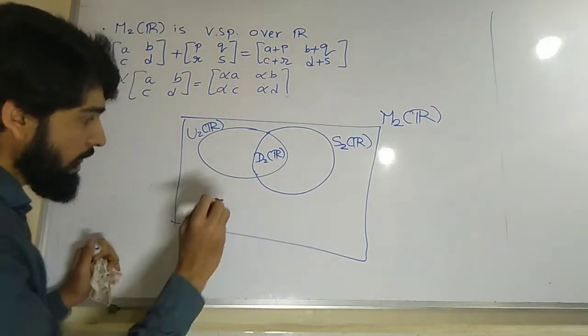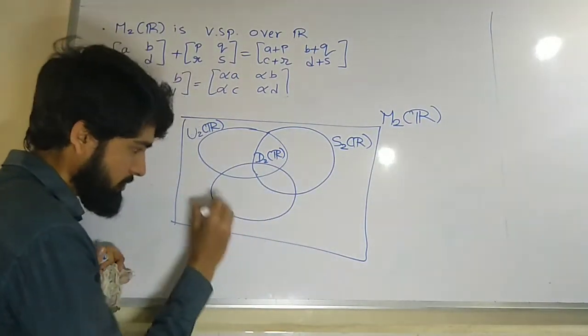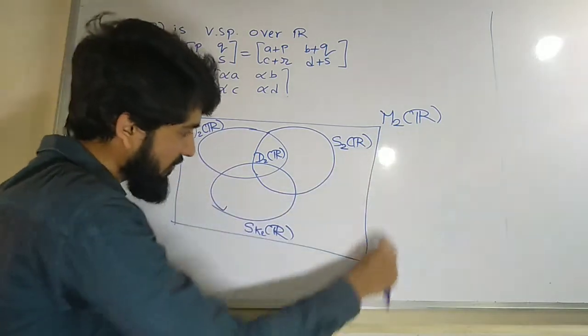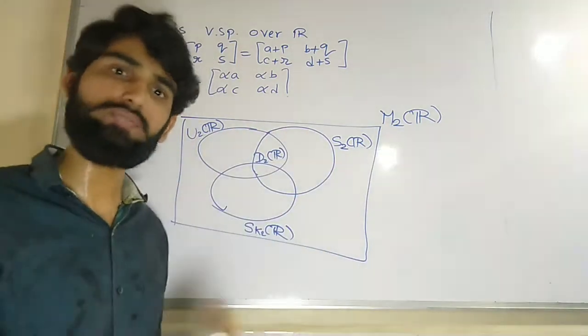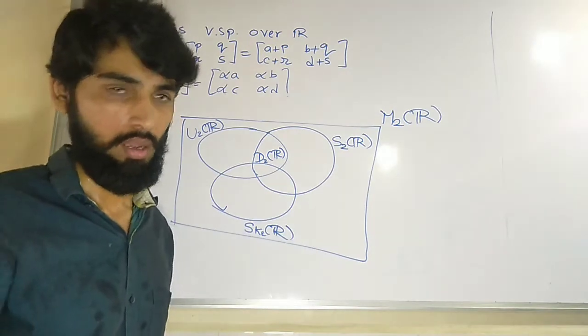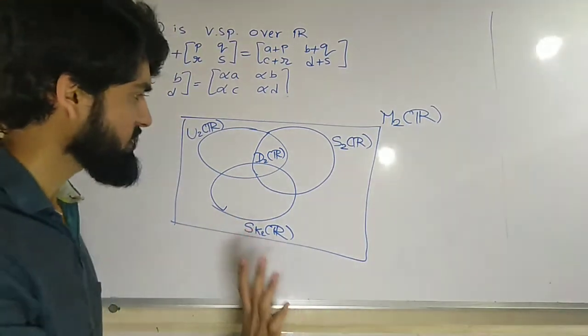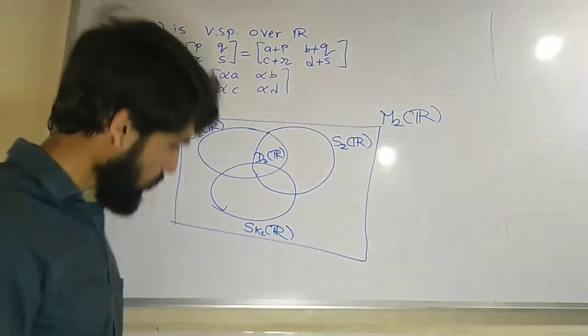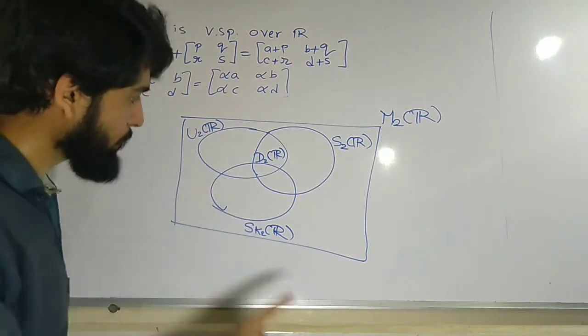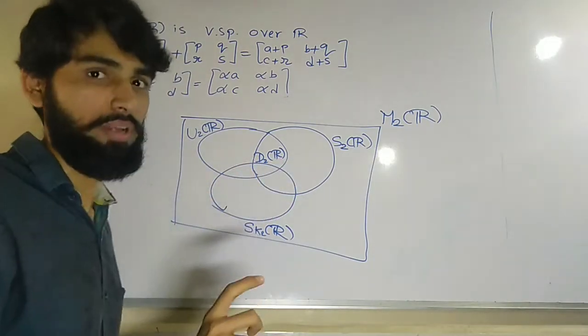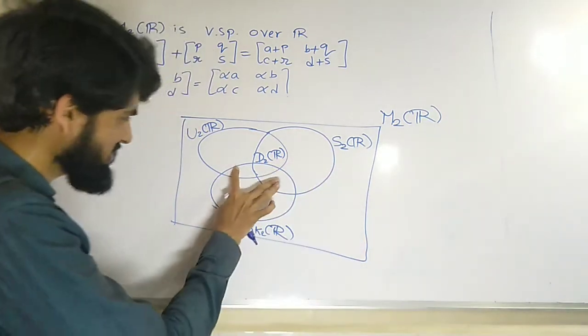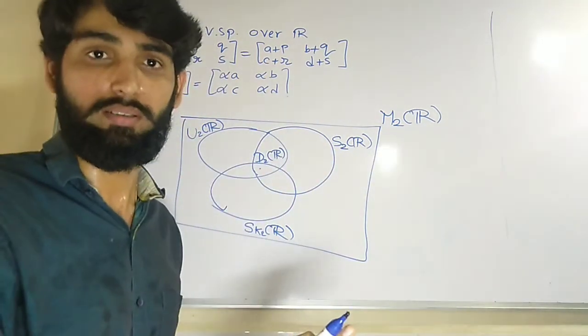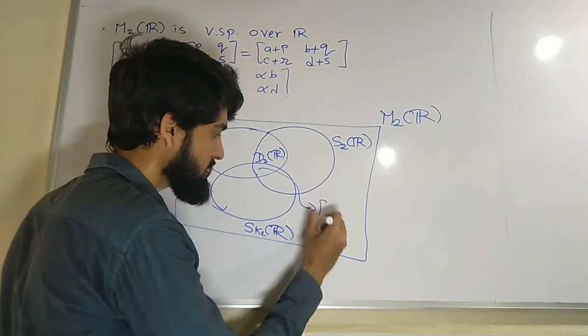After that, we have learned skew symmetric matrix, that is also subspace of it. Inside the bigger vector space, we have found smaller vector spaces which will be known as subspaces of that. So now from this diagram, I can say my D2R is subspace of S2R also. Also in this diagram, I purposely make all of them intersect at somewhere. It might be possible that intersection might be empty over here, but they must have at least one point in common, all the subspaces. That element is nothing but the zero element.